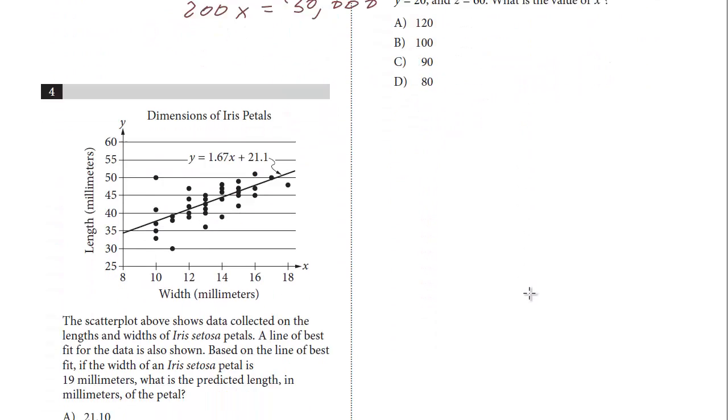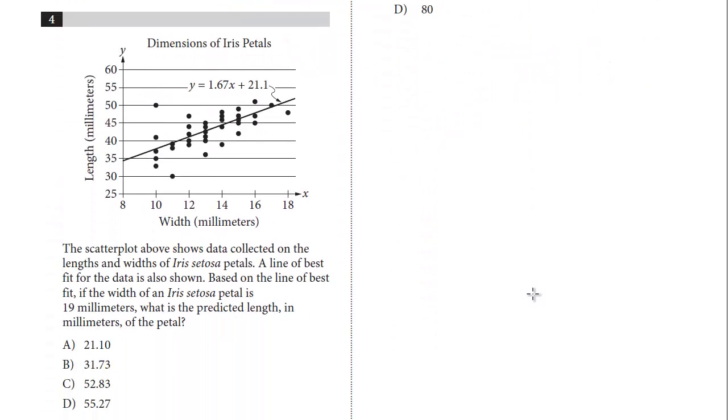Let's take a look at question number four. We've got this scatter plot showing data collected on the lengths and widths of iris petals. A line of best fit for the data is shown. Based on the line of best fit, if the width of the petal is 19 millimeters, what is the predicted length in millimeters of the petal?